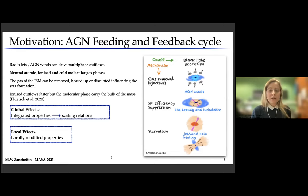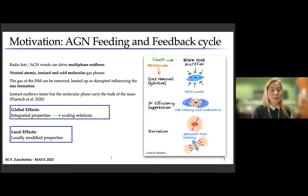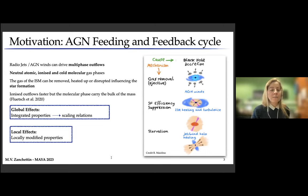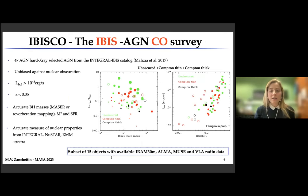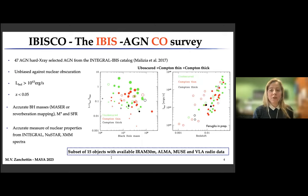In this context, we can study the impact of AGN feedback by studying the global effects — the integrated properties of the host galaxy and building scaling relations — or by studying the local effects, so how properties are locally modified. My work is focused on the IBISCO sample, the IBIS-AGN-CO survey.